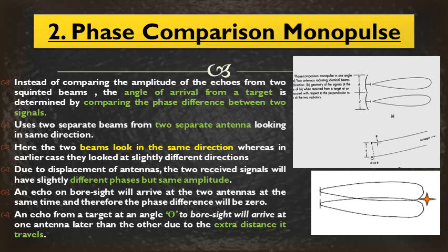The second method of monopulse tracking is the phase comparison method. In this method, we don't use two feed horns on a single antenna; instead, two separate antennas are used and we compare the phase. By comparing the phase difference between the two signals received by the two antennas, we determine the angle. Looking at this diagram, we have two antennas with a diameter of B, separated by a distance of B. Two beams are generated in the same direction — that is the key difference from the amplitude comparison method.